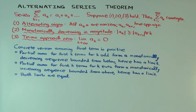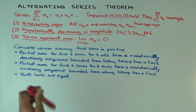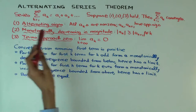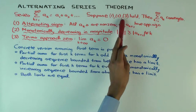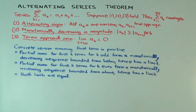This talk is going to be about the alternating series theorem. The alternating series theorem gives certain conditions under which certain kinds of series converge. It says: if a series satisfies these three conditions — 1, 2, and 3 — then it converges.